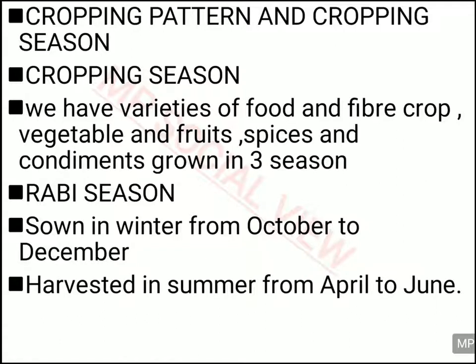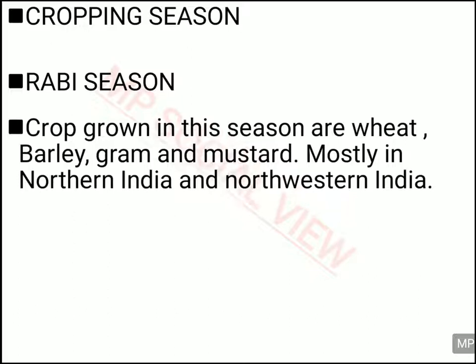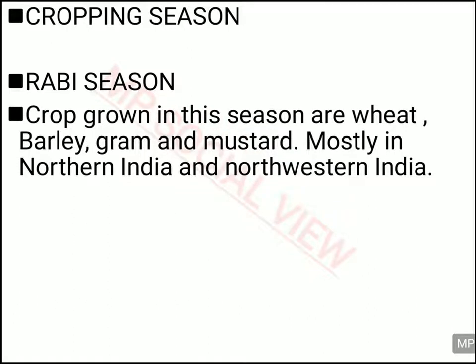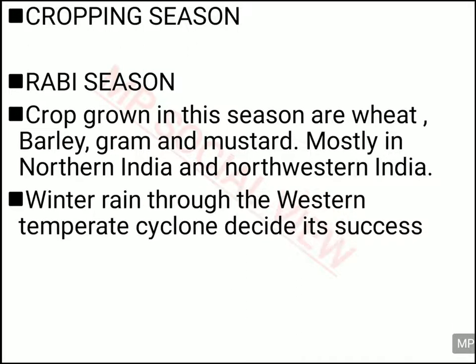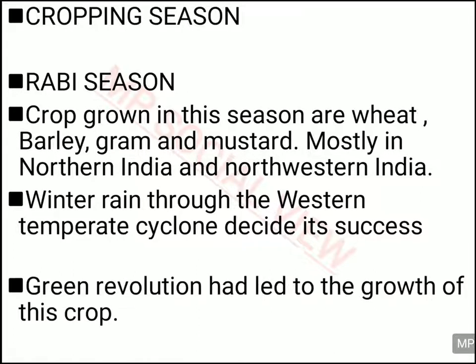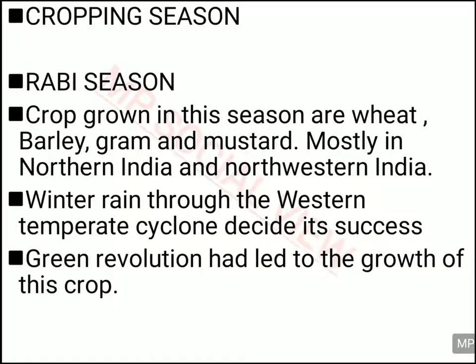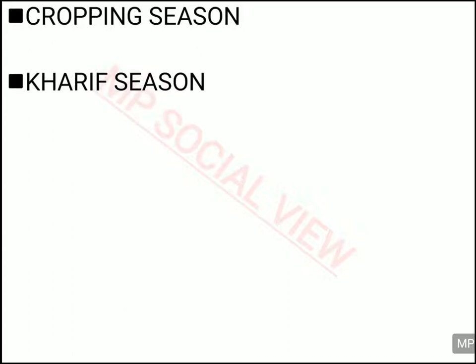In the Rabi season, you grow crops like wheat, barley, gram and mustard. It is mostly grown in northern and northwestern India. In winter, we get winter rainfall through western temperate cyclones, and this rainfall is very important for the growth of Rabi crops. The Green Revolution, when it was carried out in India, really helped to increase the production of Rabi crops.